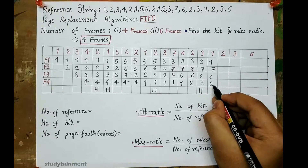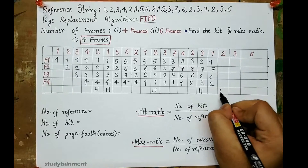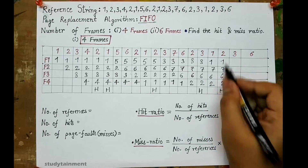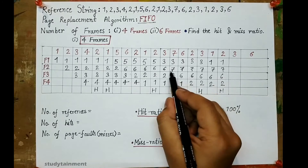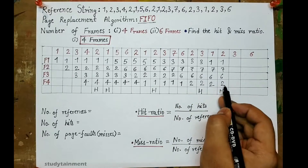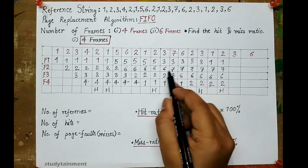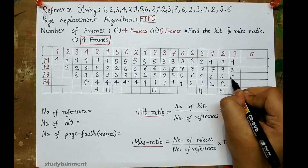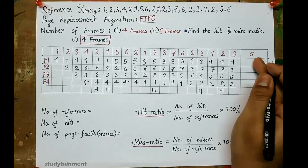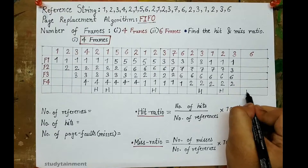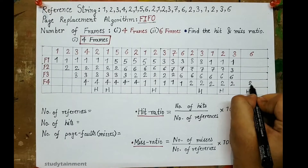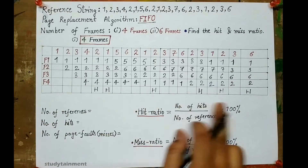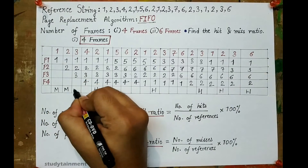Now 2 comes — 2 is already present, so this is a hit. Now 3 comes — 3 is not present, so a page needs to be replaced. Page 7 is the oldest, so 7 will be replaced with 3. Now 6 comes — 6 is already present, so this is a hit. The rest of the entries are misses, and we fill in those spaces.